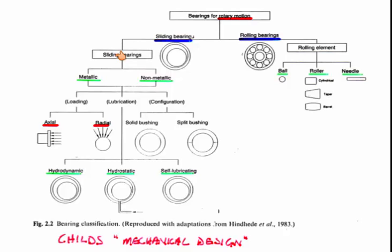On sliding bearings, we have metallic and non-metallic types. Non-metallic being PTFE-type bearings — some form of material that's very inherently slippy. Metallic ones are, as I say, the big-end shells and the main bearing shells in an engine. And there are different types of loads.